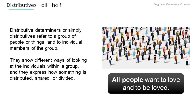Now let's have a look at an example: 'All people want to love and to be loved.' The distributive 'all' refers to people, and it tells us how many people want to love and how many want to be loved.